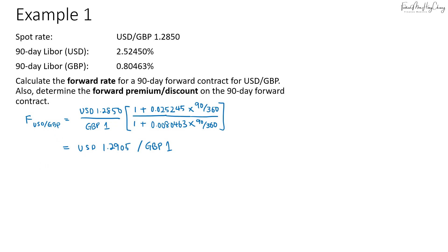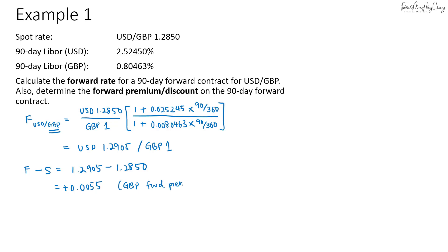This is the forward rate. To determine the forward premium or discount, we take the forward rate minus the spot rate: 1.2905 minus 1.2850, which gives us 0.0055. Since this is a positive difference, this is what we call a forward premium, and it is the base currency that is at the forward premium. In this case, we can say that pound is selling at a forward premium.